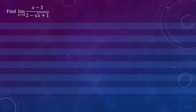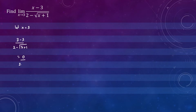Your first approach should be to try to substitute x equals 3 into your expression. Let's let x equal 3 and see what happens. We get 3 minus 3 divided by 2 minus the square root of 3 plus 1, which gives us 0 divided by 2 minus 2 — that's 0 over 0, which is the indeterminate form.